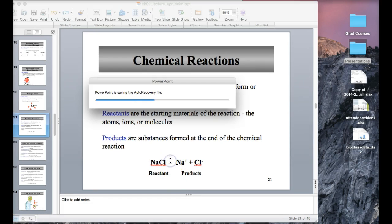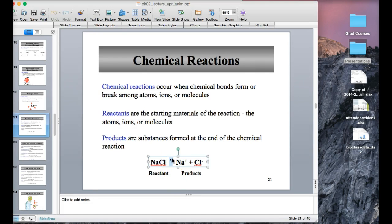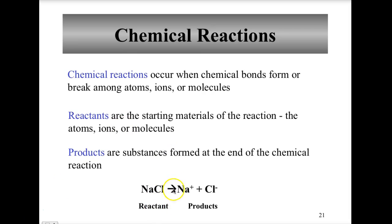If we look at this chemical equation down here, what we'd have is here's the reactant, and then you get a sodium ion, which would be the cation, and the chlorine anion as a product there.